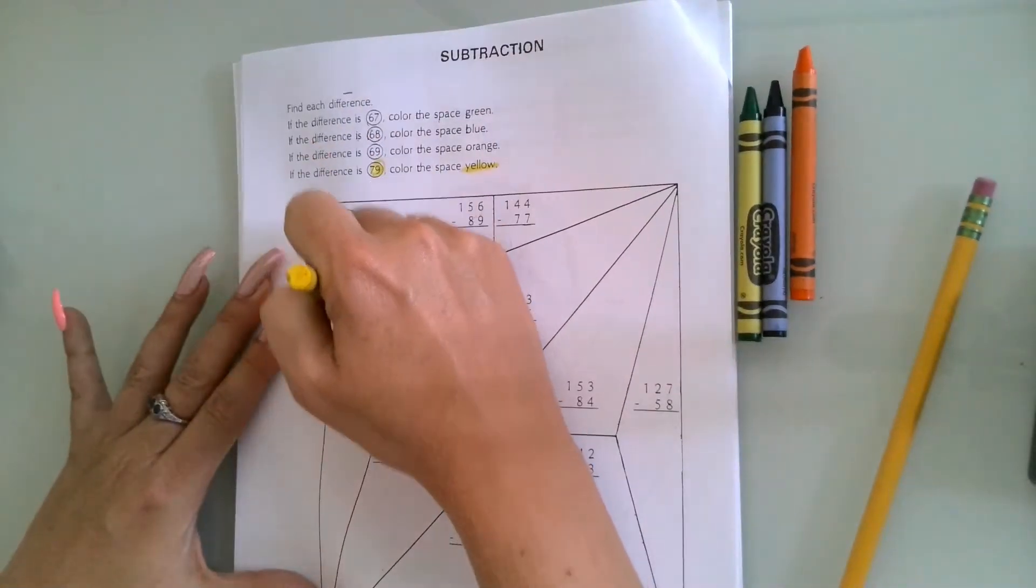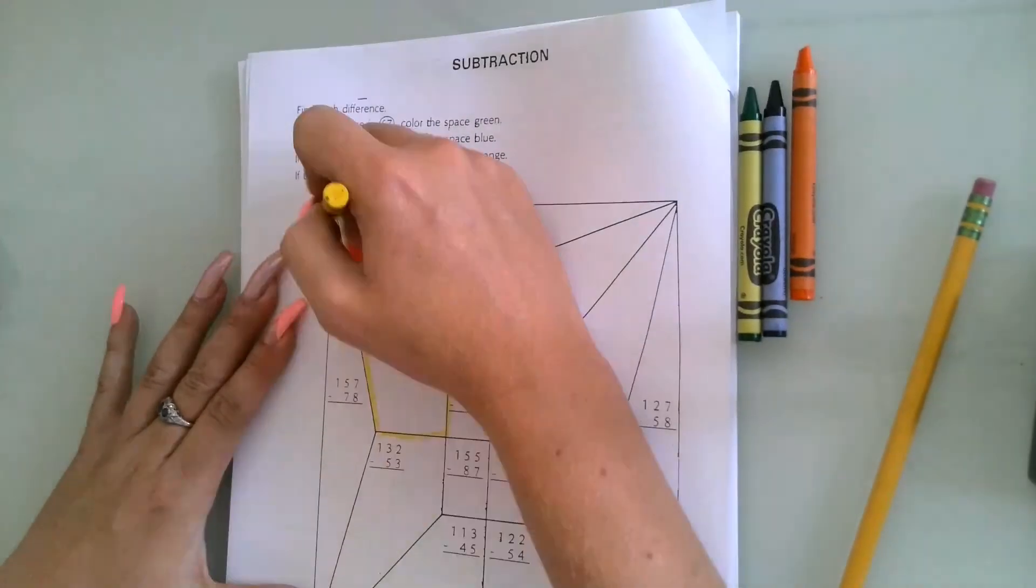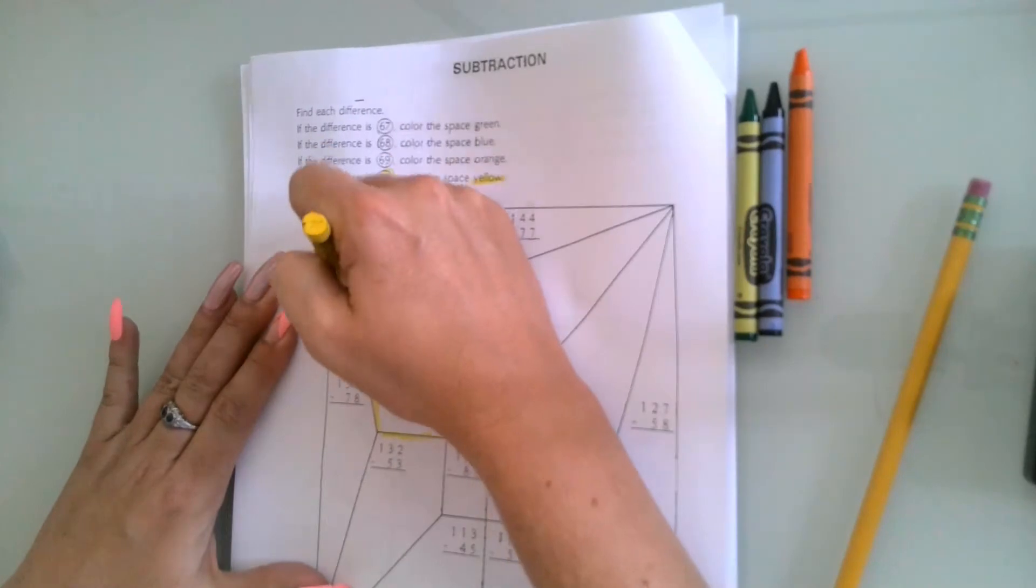So 79, it gets colored yellow. I'm just going to outline it and I'll come back and color once I'm done all my math problems. You might like to color as you go. I like to color at the end so I'm going to have a good time all at the end.